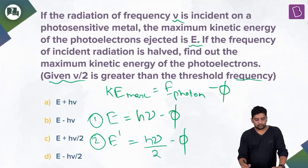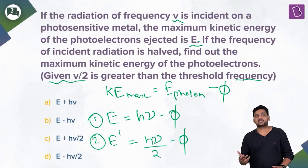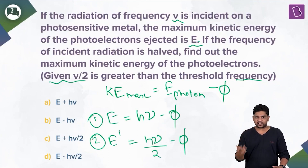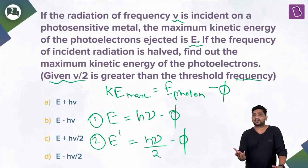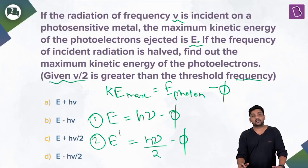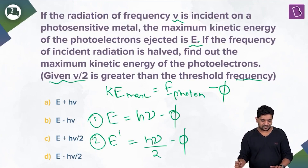Frequency has become ν/2, so the energy of the photon will be hν/2. Work function is still the same — it's the same metal, so φ won't change. Therefore hν/2 − φ is going to be E′.